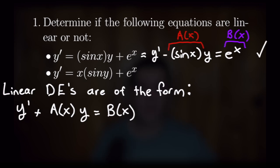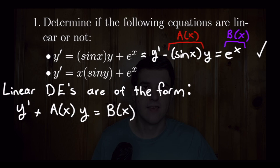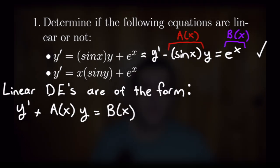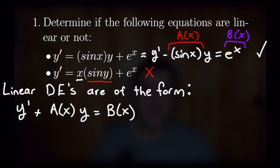Now let's look at our second equation: y prime is equal to x times sine of y plus e to the x, where we flipped our x and y on that sine term. No matter how we rewrite the terms on the right-hand side, we are never going to be able to get a function of x multiplied by y. Because of that, it is impossible for this second equation to be linear, as we are stuck with that sine y — which I've underlined in red. Now that we have this basic understanding of linearity, let's move on to trying some problems with our formula.